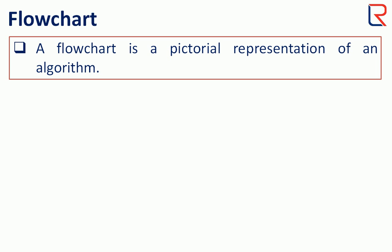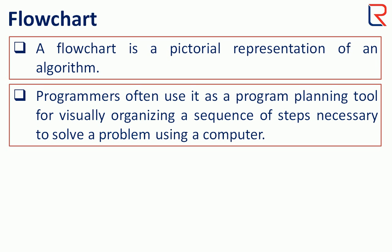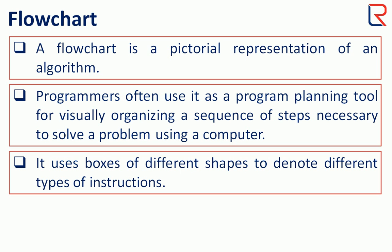A flowchart is a pictorial representation of an algorithm. Programmers often use it as a program planning tool for visually organizing a sequence of steps necessary to solve a problem using a computer. It uses boxes of different shapes to denote different types of instructions.